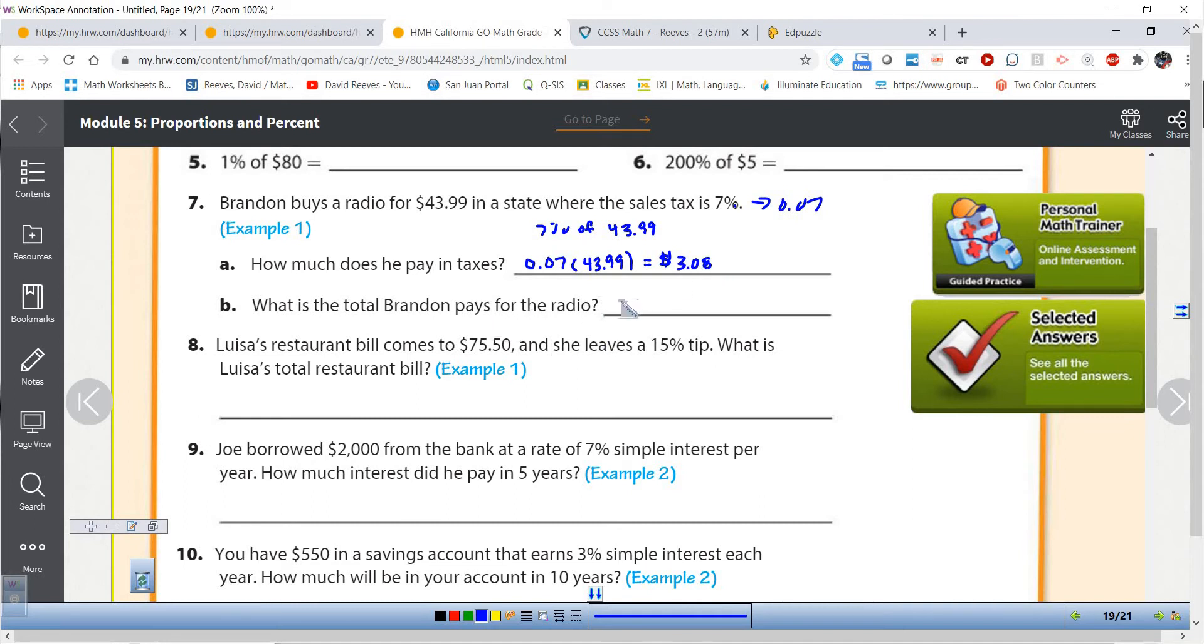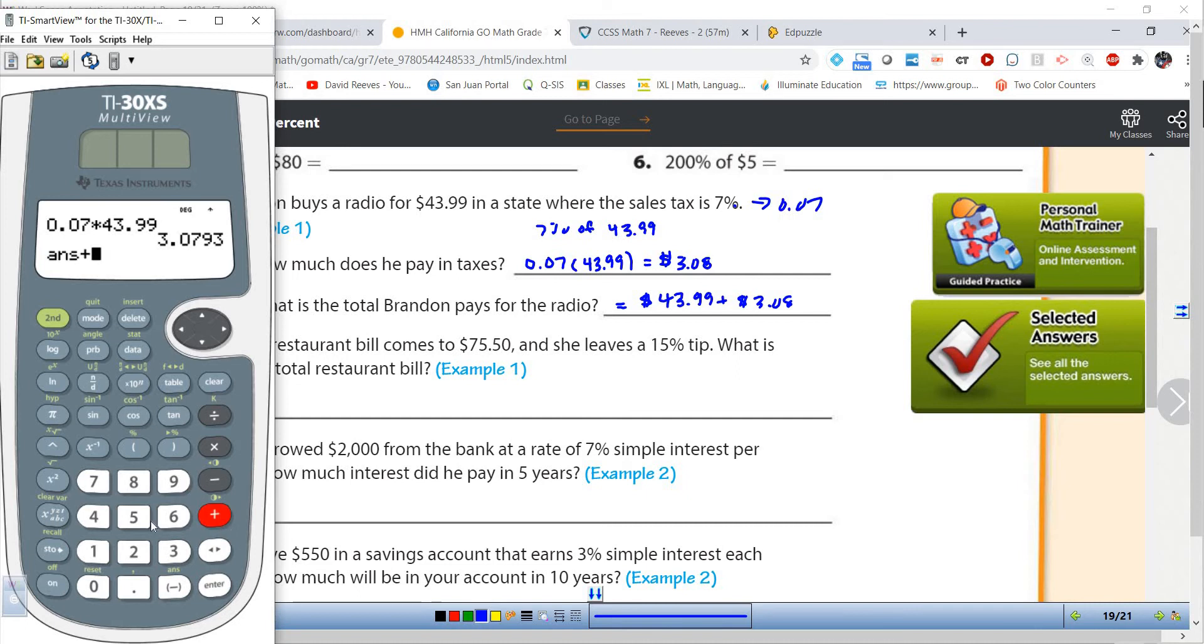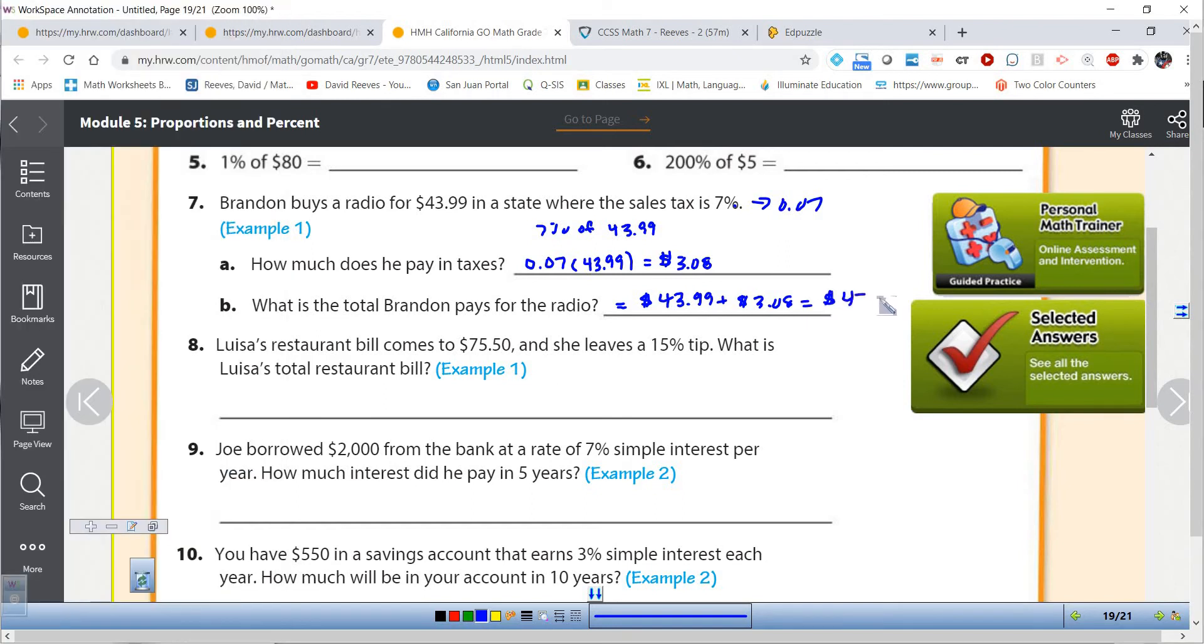So he's going to pay $3.08 in taxes. So what is the total cost he's going to pay? Well, the total cost is his original cost, 43.99, plus that tax that he's paying, 3.08. If I go back to my handy dandy calculator, and add that to my original 43.99, what I get is $47.07.